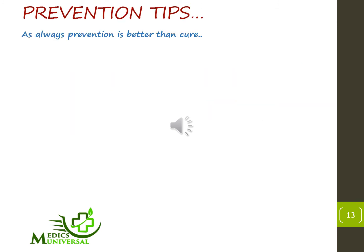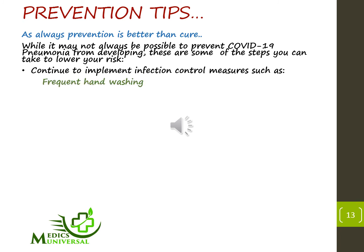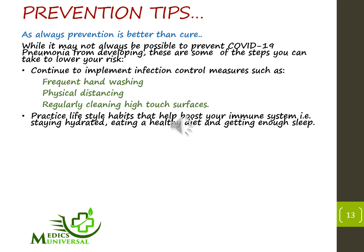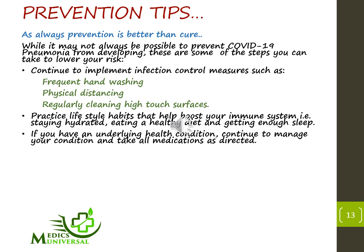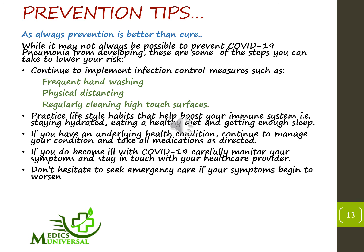Prevention is better than cure. While it may not always be possible to prevent COVID-19 pneumonia from developing, here are steps you can take to lower your risk. Number one, continue to implement infection control measures such as frequent hand washing, physical distancing, and regularly cleaning high-touch surfaces. Number two, practice lifestyle habits that help boost your immune system, for example staying hydrated, eating a healthy diet, and getting enough sleep. If you have underlying health conditions, continue to manage your condition and take all medication as directed. Lastly, if you do become ill with COVID-19, carefully monitor your symptoms and stay in touch with your healthcare provider. Do not hesitate to seek emergency care if your symptoms begin to worsen.